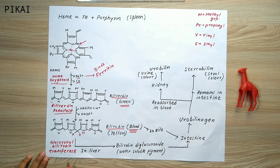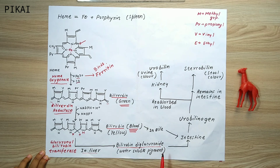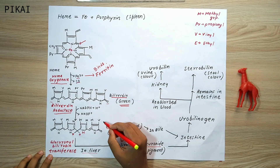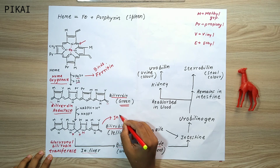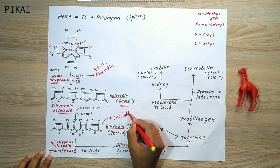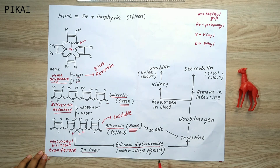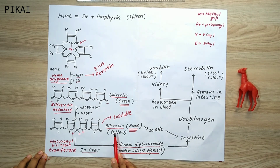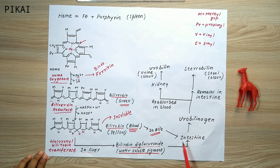Inside the liver, the enzyme glucuronosyl bilirubin transferase converts bilirubin into a more soluble form known as bilirubin diglucuronide. Previously, bilirubin was very insoluble in water — and since blood is mostly water, this was significant. Bilirubin diglucuronide is now water-soluble and can be transported in the blood.